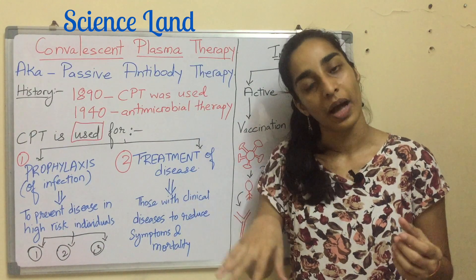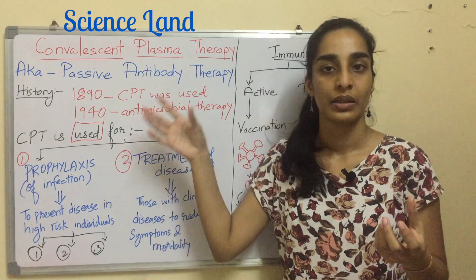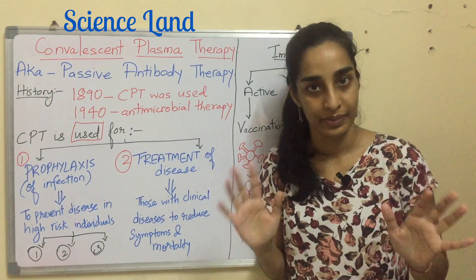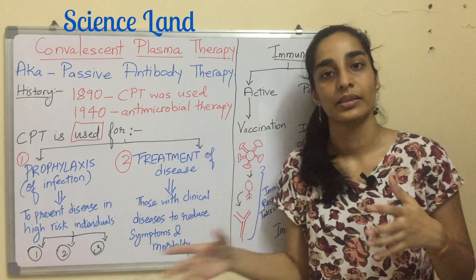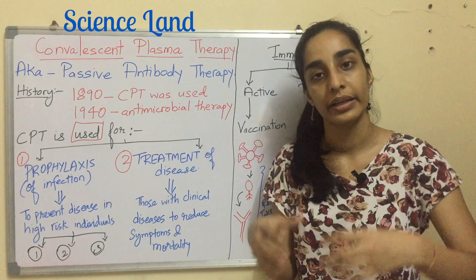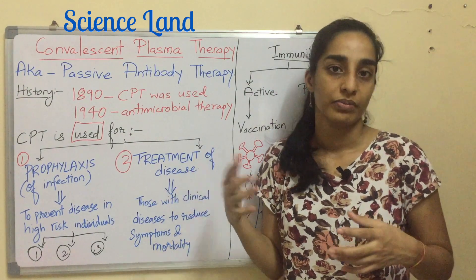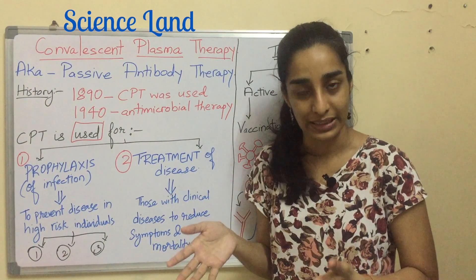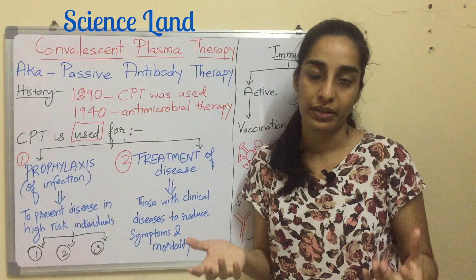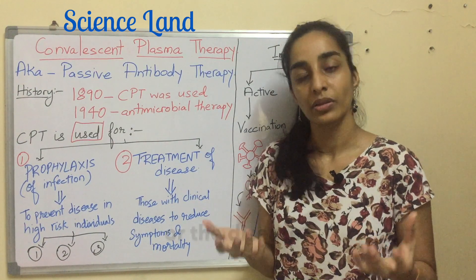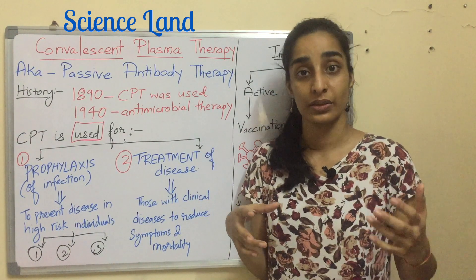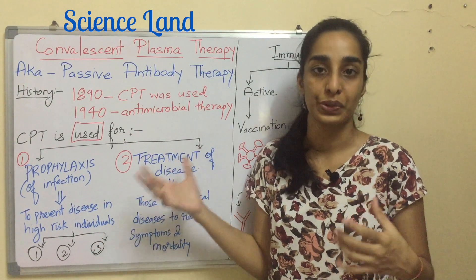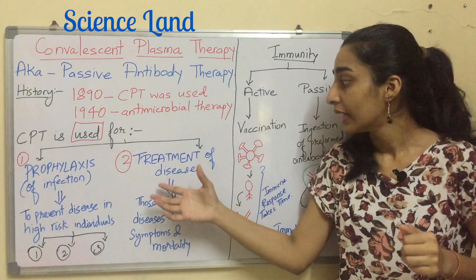The second high-risk category is people who have had exposure to confirmed cases. For example, if one person in a family is COVID-19 positive, the other family members can use plasma therapy to prevent the same disease. The third category is people with underlying medical conditions like diabetes or heart disease, which can aggravate the situation and induce comorbidity — these people also use CPT.